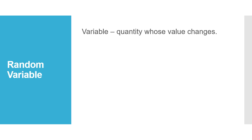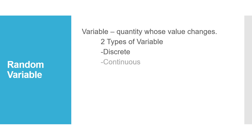There are two types of variable. First, we have discrete variable. A discrete variable is a variable whose quantity is obtained through counting. For example, the number of teachers who attended the seminar, or the number of students absent for the day. The second type is continuous variable, whose value is obtained through measuring. For example, the amount of sugar put in a coffee, or the amount of flour put in a bread mixture.